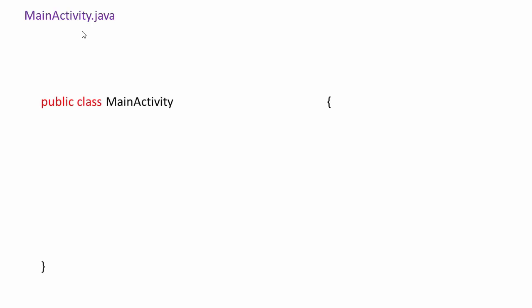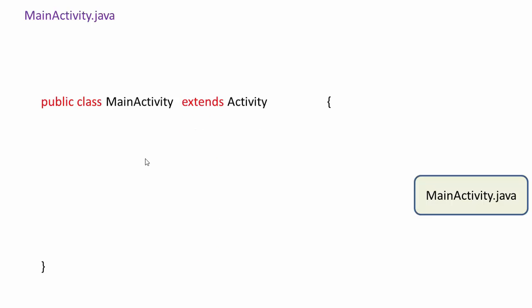Next comes MainActivity.java, which is our Java file. Inside MainActivity.java we have some code — public class MainActivity. This MainActivity extends Activity, and Activity is a super class. This uses the concept of inheritance that we use in Java.